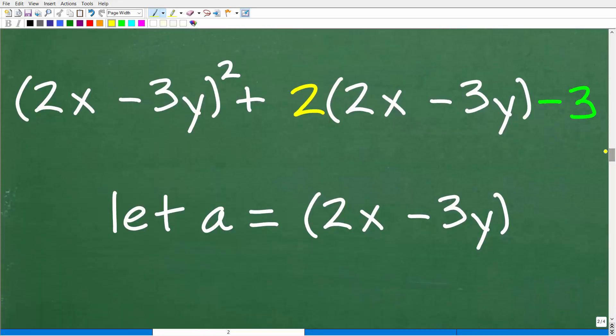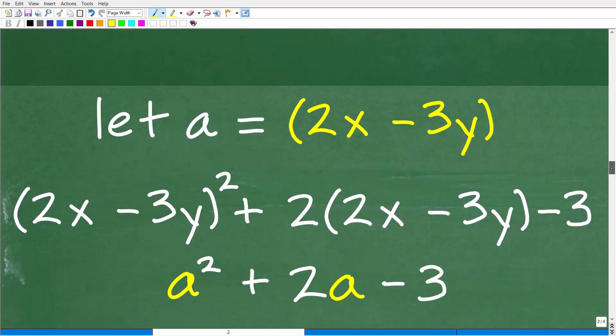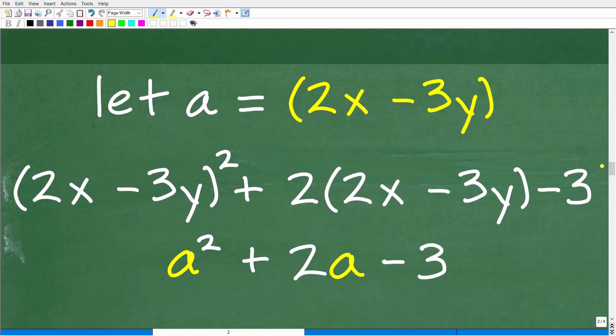And hopefully, some of you are like, okay, Mr. YouTube Math, man, I see what you're doing here. This thing squared plus two times this same thing minus three. Maybe we can use substitution here and think of this as a quadratic trinomial. And you would be absolutely right. So let's let this variable a represent this 2x minus 3y. Because this is going to make this expression very interesting and easy to work with. So let's go ahead and see what I'm suggesting right now.